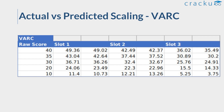Now let's have a quick look at our actual versus predicted scaling for all three sections across the three slots. Before the results were announced, we predicted the scaling, and these are those predictions. The predictions for the VARC section were pretty close to the actual scores. Similarly in Slot 2 there's no big difference, and these are the Slot 3 scaled scores versus our predicted numbers.